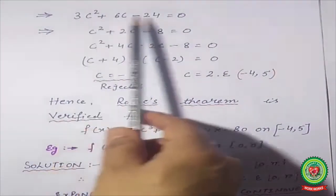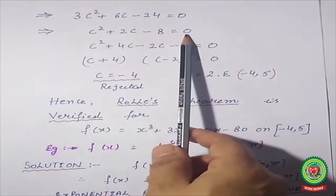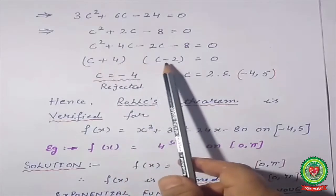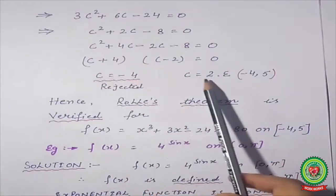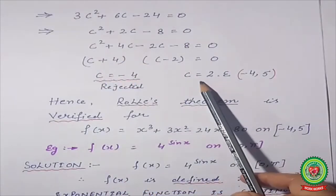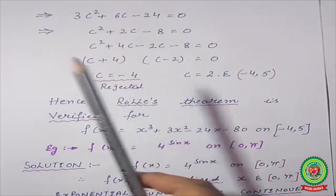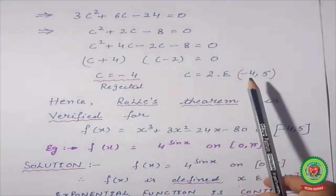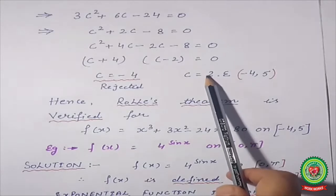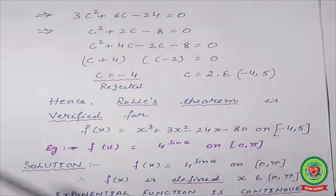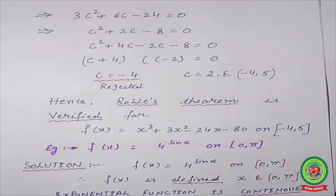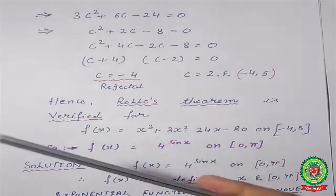So f′(x) = 3x² + 6x − 24; putting x = c, we get f′(c) = 3c² + 6c − 24 = 0. Taking 3 as common: c² + 2c − 8 = 0. By factoring: (c + 4)(c − 2) = 0, so c = −4 or c = 2. Since −4 is an endpoint and not in the open interval, it is rejected. Therefore c = 2, which belongs to (−4, 5). Hence Rolle's Theorem is verified.